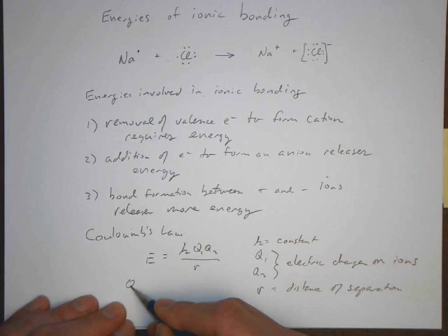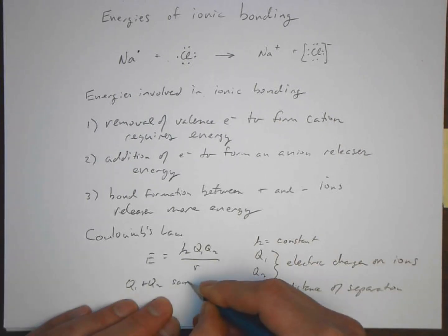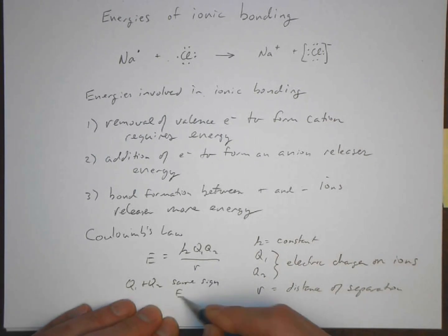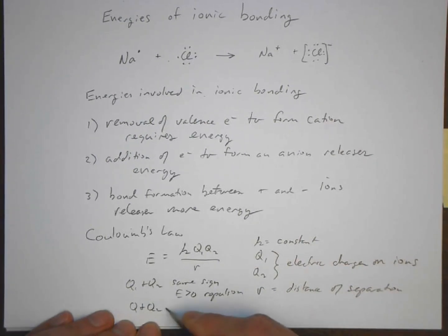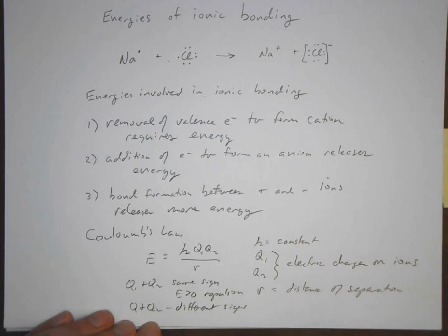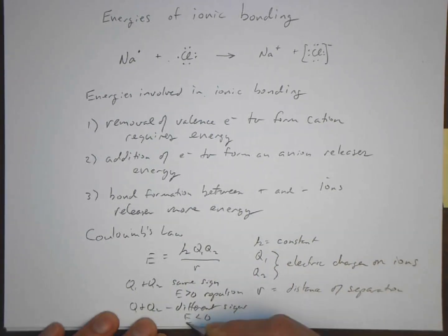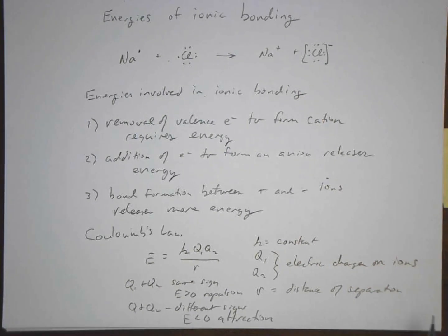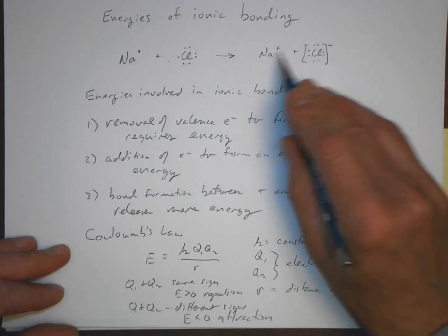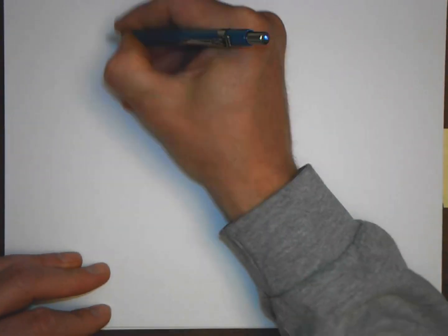If q1 and q2 are the same sign, the energy is greater than zero and you get a repulsion. If q1 and q2 are different signs — if we have a positive ion and a negative ion — those are going to be attracted to one another, and the energy is less than zero, giving an attraction. This is where bond formation between positive and negative ions releasing more energy comes from — it's Coulomb's law, Coulombic attraction between a positive and a negative ion.